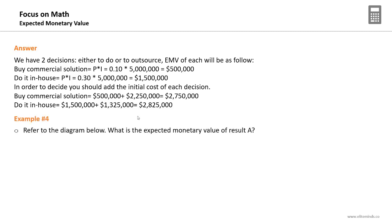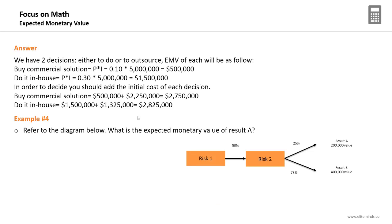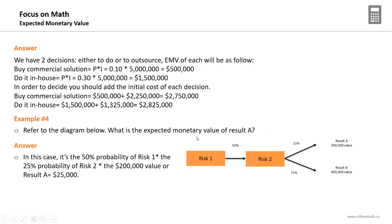Another example: refer to a decision tree diagram asking for the EMV of Result A. The trick is that Result A has a $200,000 impact and 25% probability, but you must also consider the 50% probability of reaching that branch previously. So the EMV is not just 25% × $200,000. It is 50% × 25% × $200,000 = $25,000 USD.